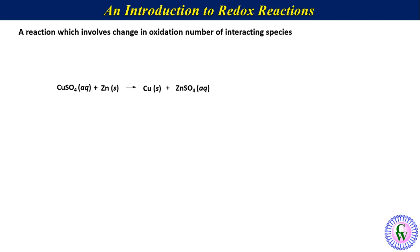On the reactant side, in copper sulphate the oxidation number of copper is plus 2, and the oxidation number of zinc is 0. On the product side, the oxidation number of copper is 0 while the oxidation number of zinc in zinc sulphate is plus 2. Thus, during this reaction the oxidation number of copper changes from plus 2 to 0, while that of zinc changes from 0 to plus 2. So this reaction is an example of a redox reaction.